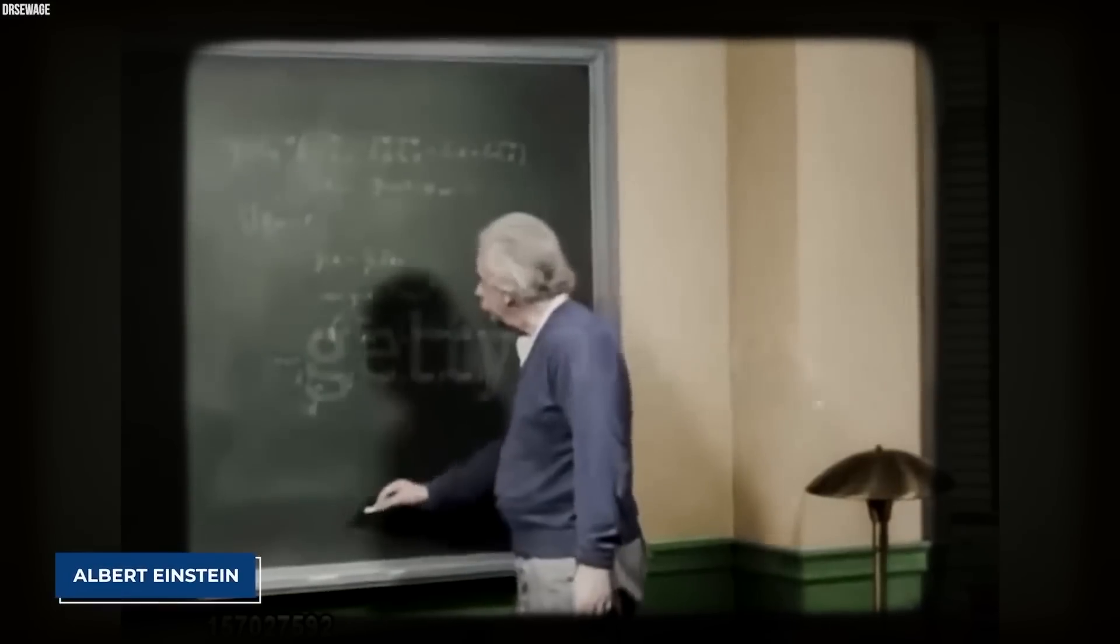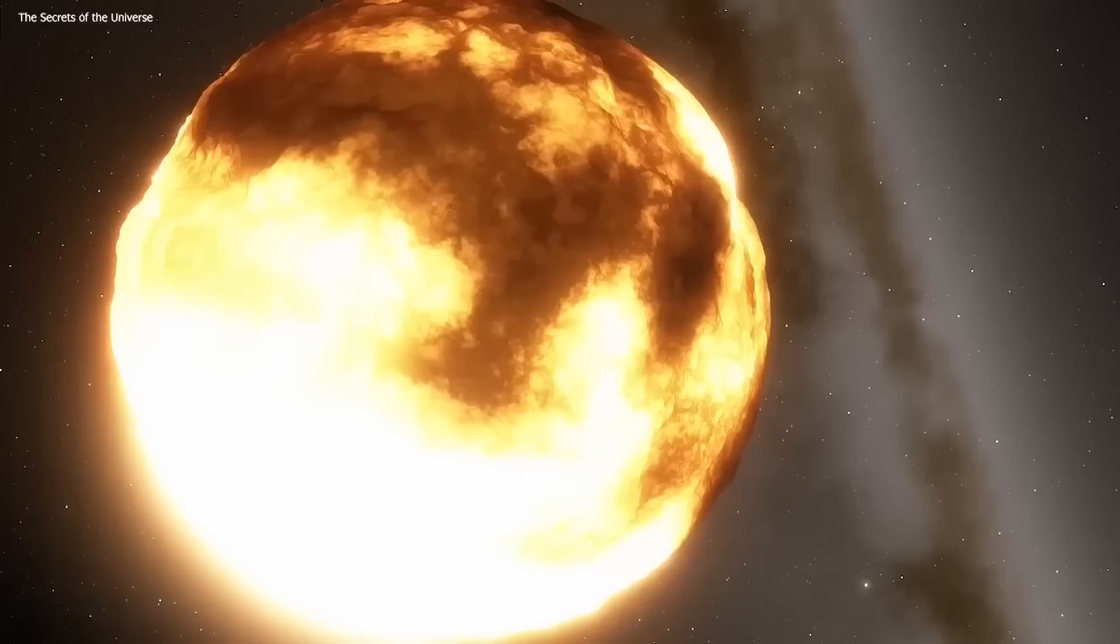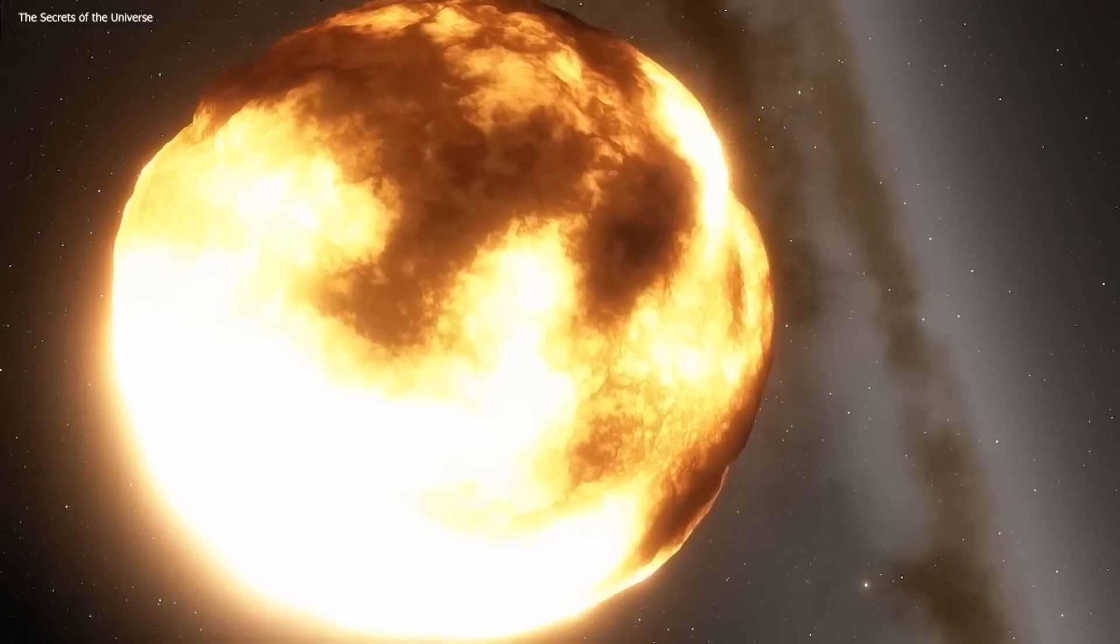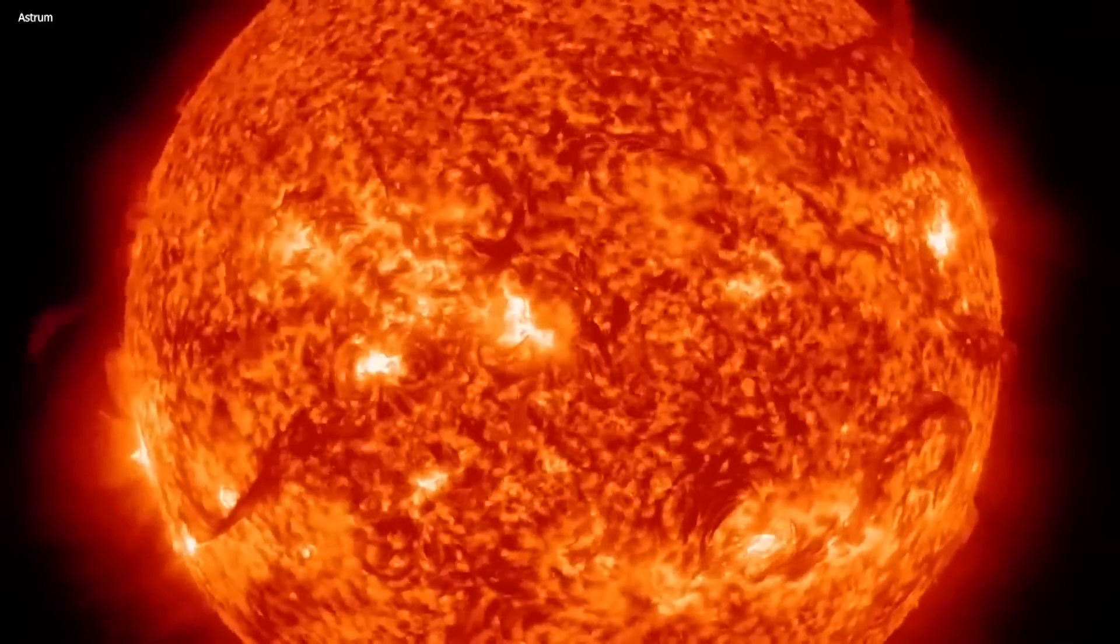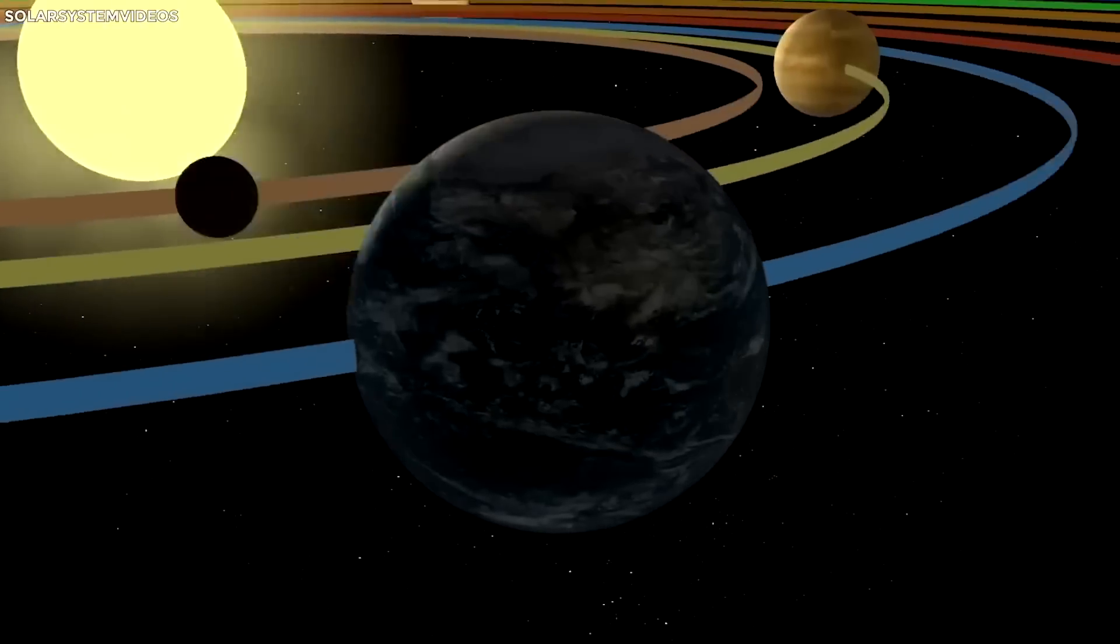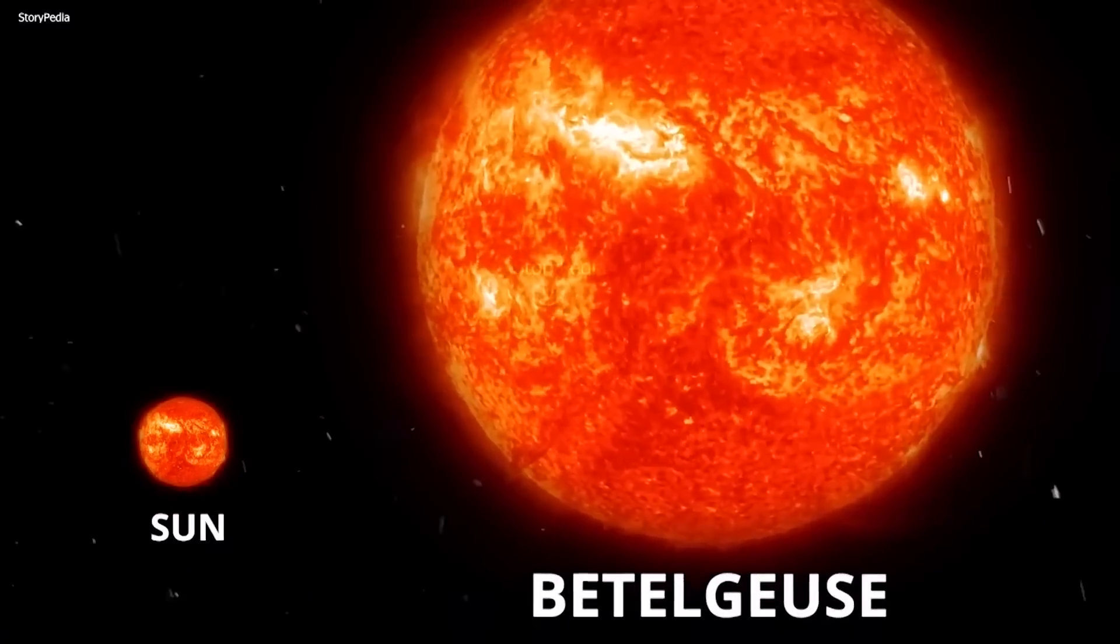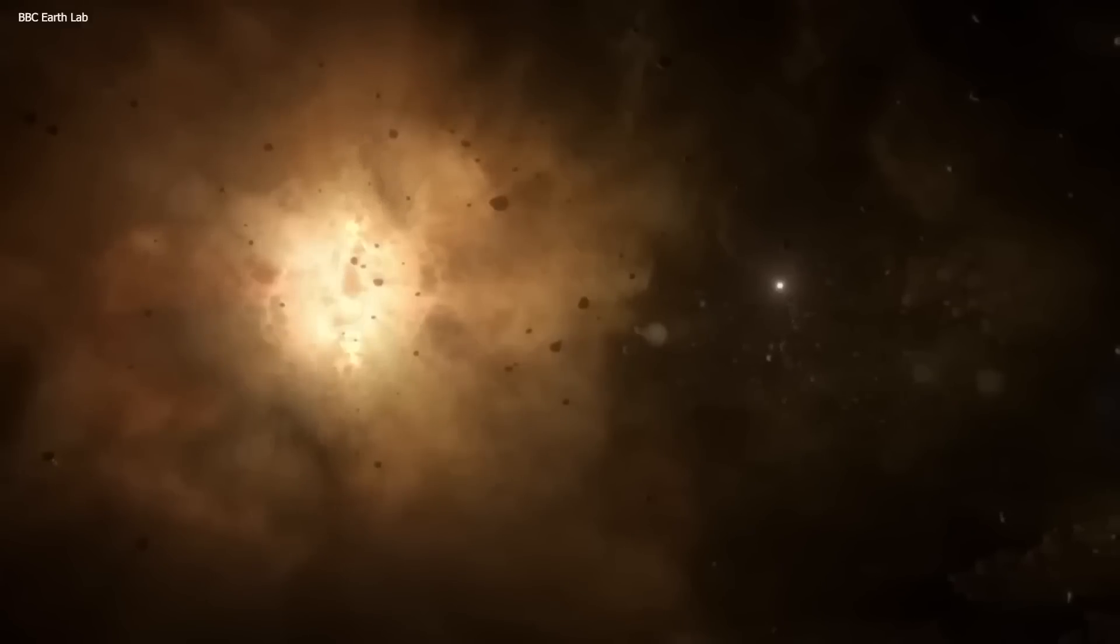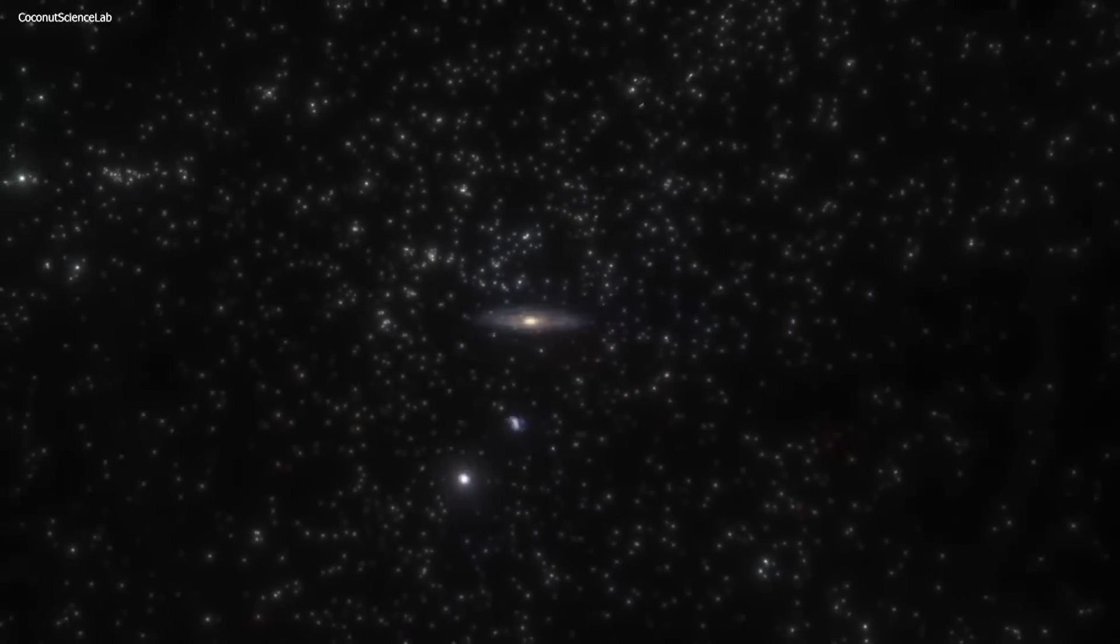A supernova explosion can produce light equivalent to a whole galaxy, and if a neighboring star like Alpha Centauri were to undergo such an explosion, we would be bathed in radiation of all kinds. While we haven't observed a supernova in our galaxy since 1604, a supernova eruption in the Large Cloud of Magellan in 1987 was visible from a distance of 169,000 light years.